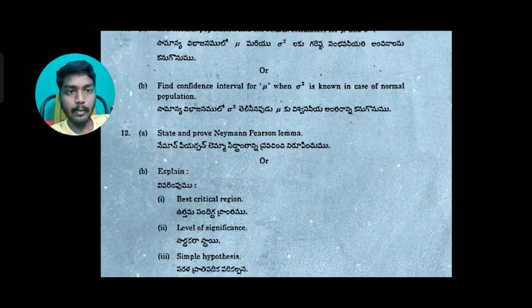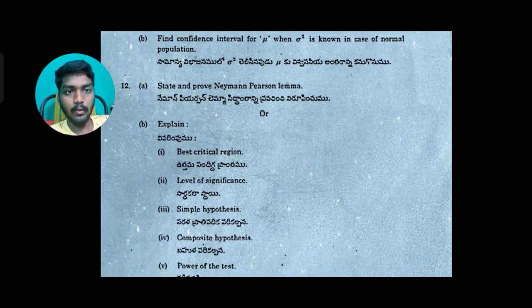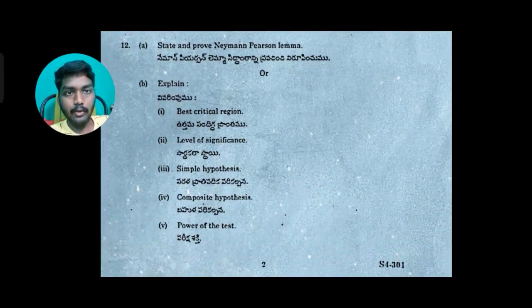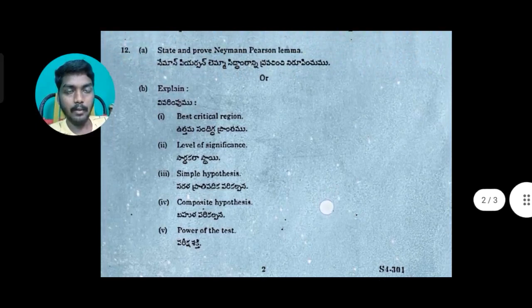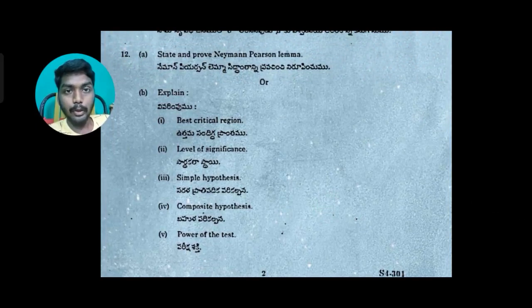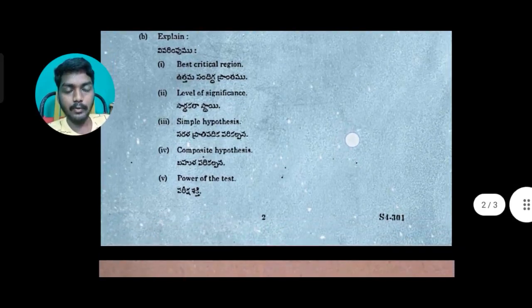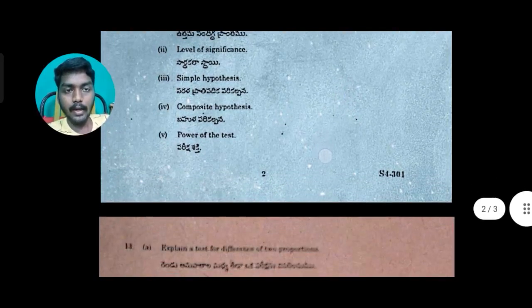To find the 10-mark answer, look at the different questions. It is generally easy to make 10 marks if you make 5 topics and can explain 5 topics. The question is to explain simple hypothesis, composite hypothesis, and power of the test. In the 2020 question paper we explain three topics; here we have a total of 5 topics to explain for 10 marks.